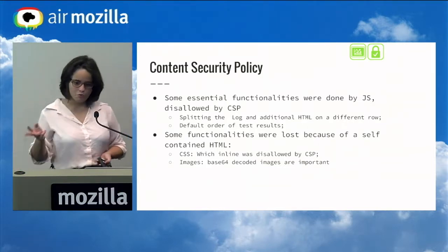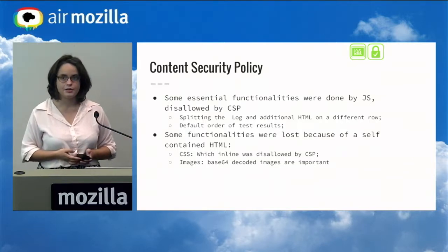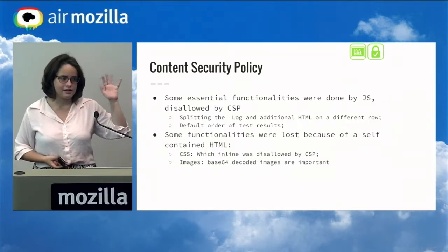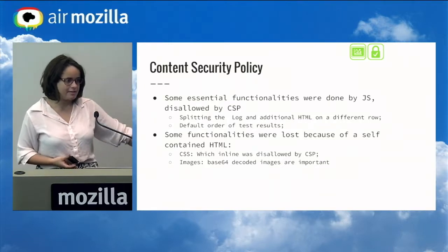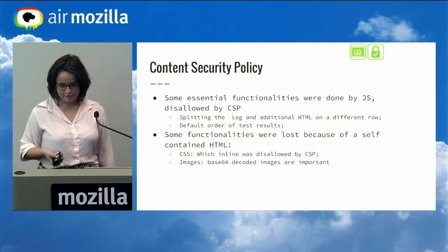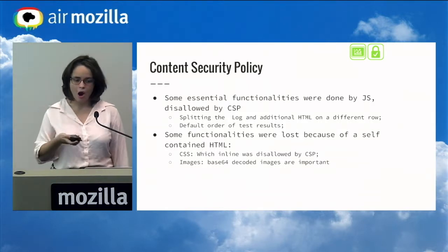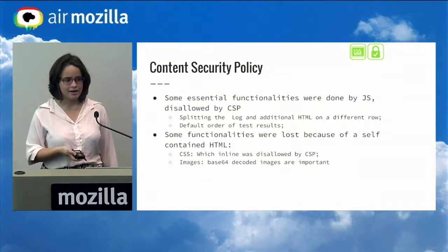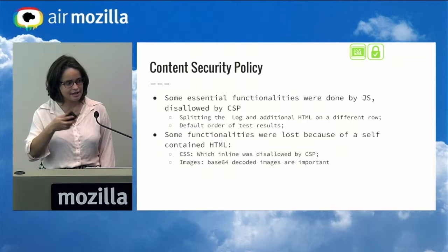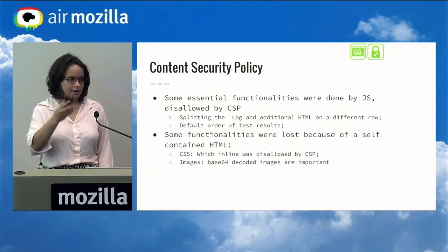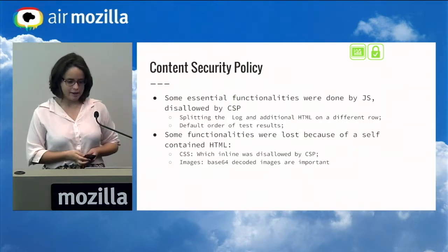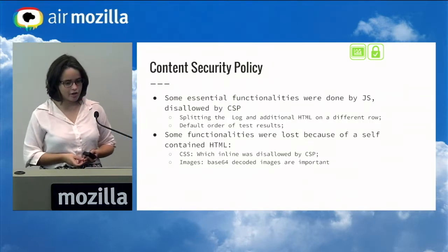Another functionality was the default order of test results. When we see the results, we see first the failed results, then the xfailed, then the skipped, and then passed in the last position. But it was done by JavaScript, so on Jenkins you could not see that order anymore. To fix that, I created a class for the test results and then sorted them in the HTML table in Python code, so when the table was created, it was already ordered.